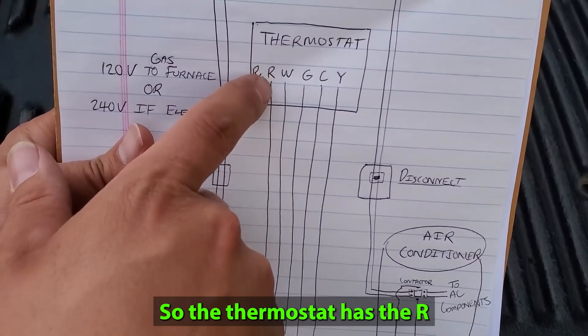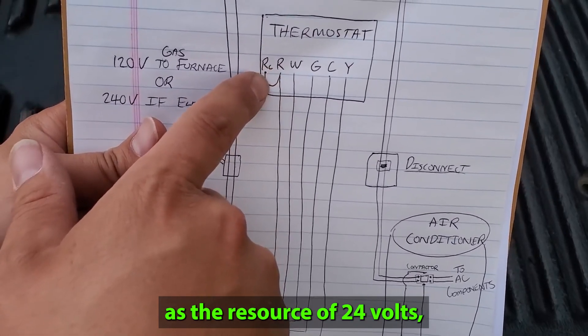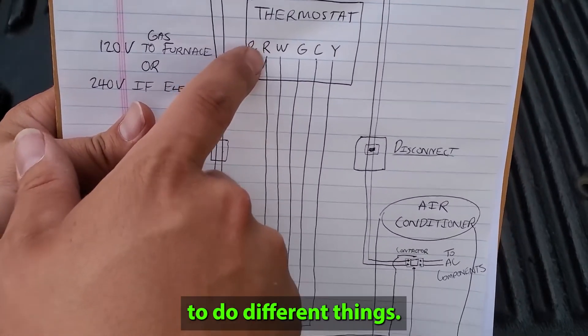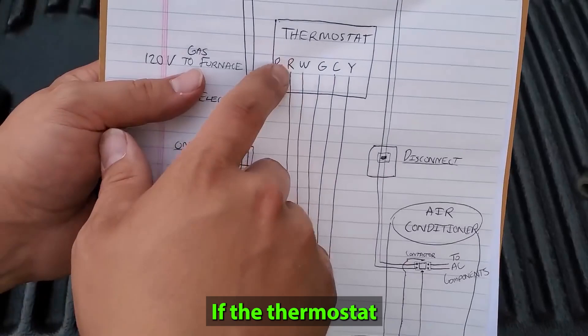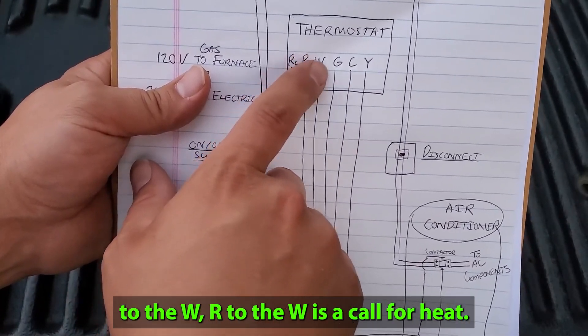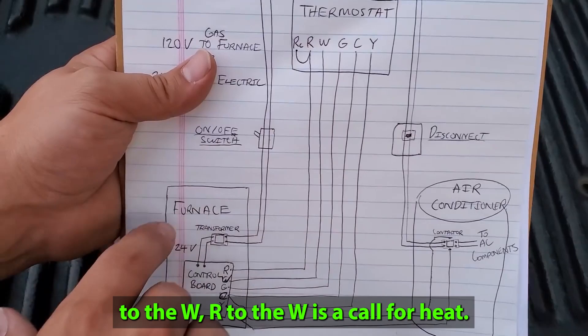So the thermostat has the R as the resource of 24 volts, which it can then use to do different things. If the thermostat wants to turn on the heating, it will jump from the R to the W. R to the W is a call for heat.